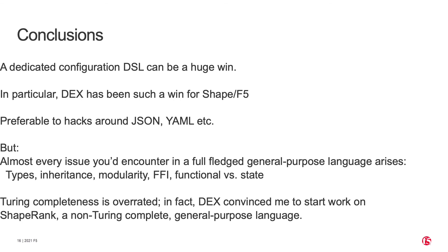The lessons here are that doing your own dedicated external DSL for configuration can be a huge win, as it has been for Shape, because it really fulfills a business-critical function and does it much better than the typical hacks seen in industry — XML, JSON, YAML, and so forth. On the other hand, as with many DSLs, most of the problems you see in a general-purpose language eventually arise and have to be dealt with: types, inheritance, modularity, foreign functions, and questions around functional programming and dealing with state and the outside world.